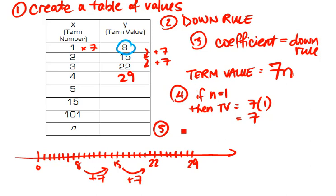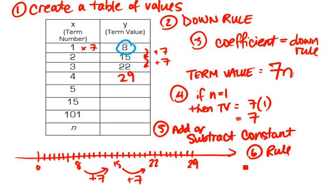And the fix is what we call a constant. So I add or I subtract a constant to fix for the answer. The one that I got was 7, but the answer I want is 8. So the fix or the constant I have to do is I have to add 1. So I propose my rule is term value equals 7n plus my fix, which is the 1.